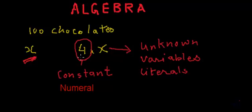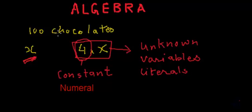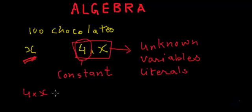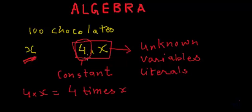In algebra, a constant and a variable — or constants and variables — coexist. They are present in all or most expressions; they are the parts of an algebraic expression. So what is the meaning of 4 multiplied by X? This is actually 4 times X, and this is how we write the expression 4 times X.